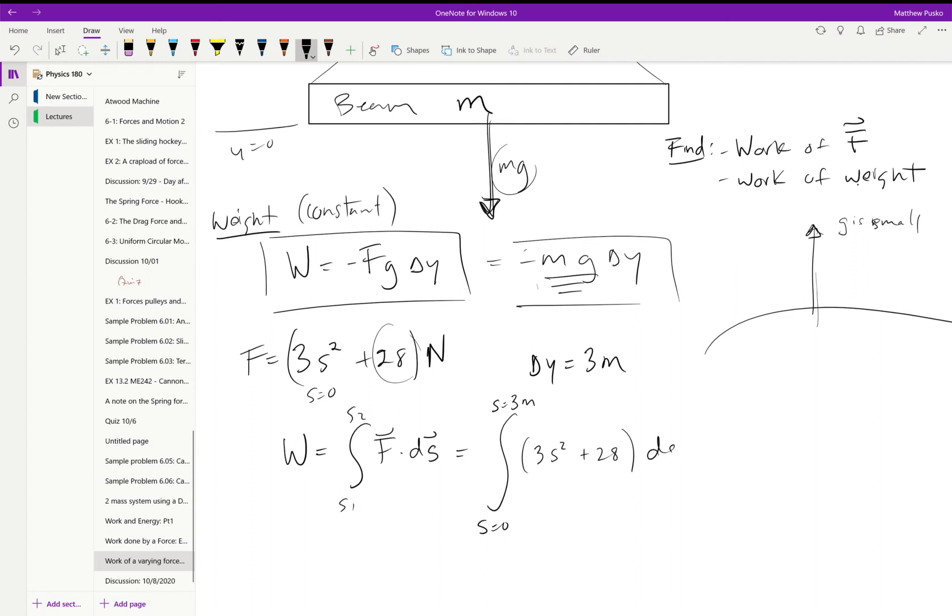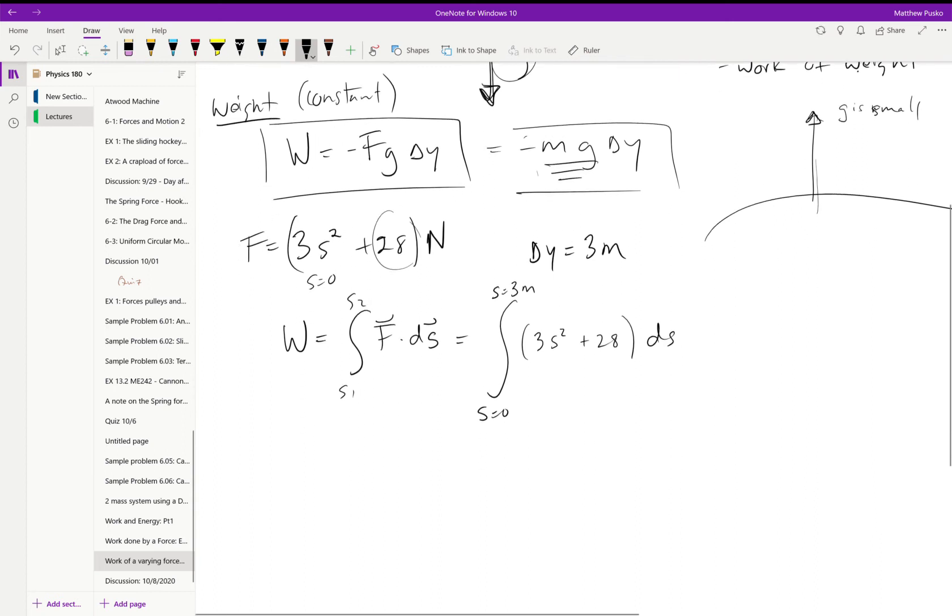And we've got to actually integrate this. So doing so would give me s to the third divided by 3 makes that go away. And we have a plus 28 s. All right, now this whole thing needs to be evaluated from 3 meters to 0 meters.